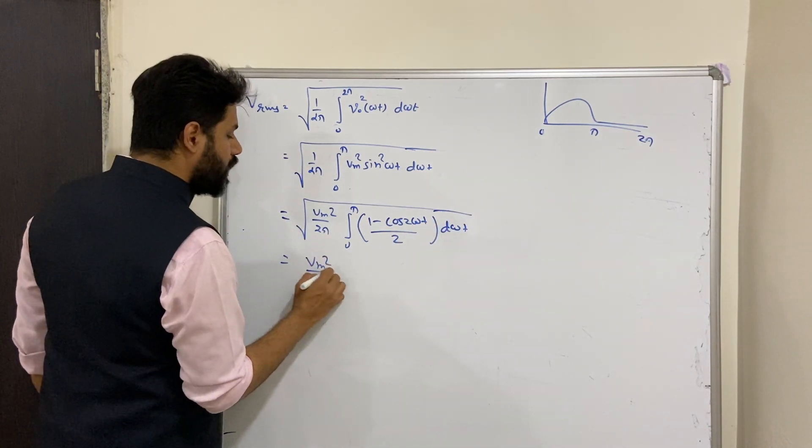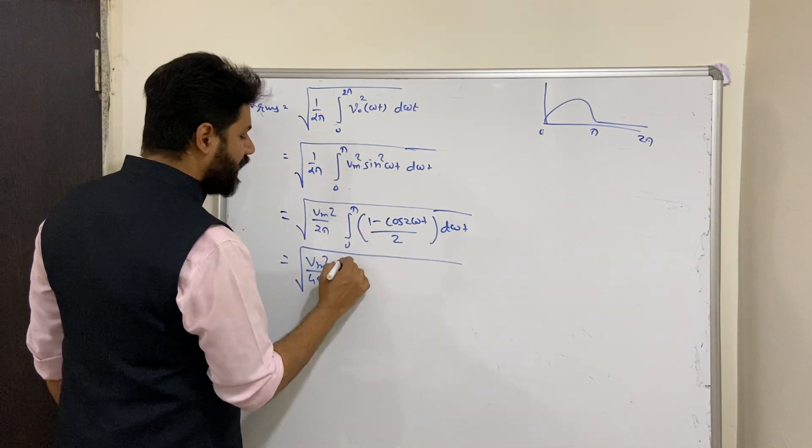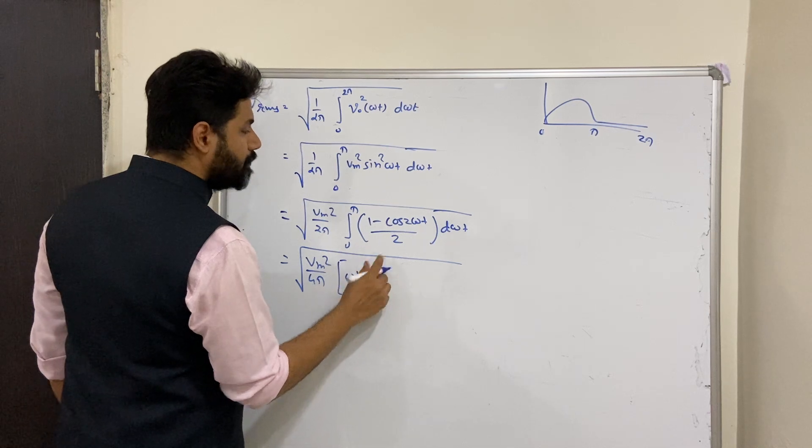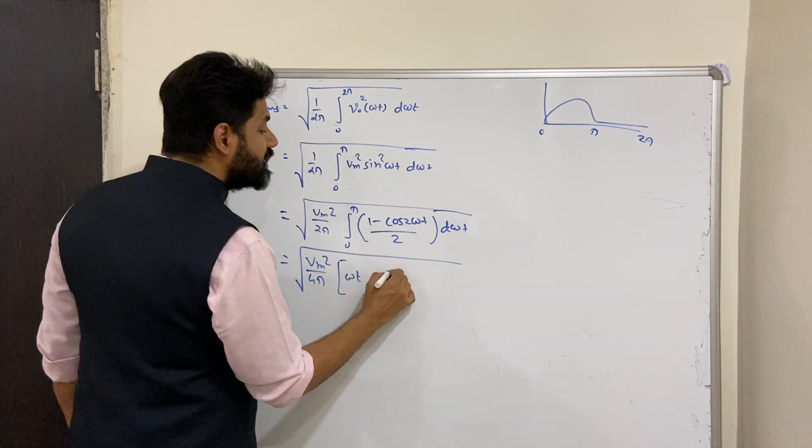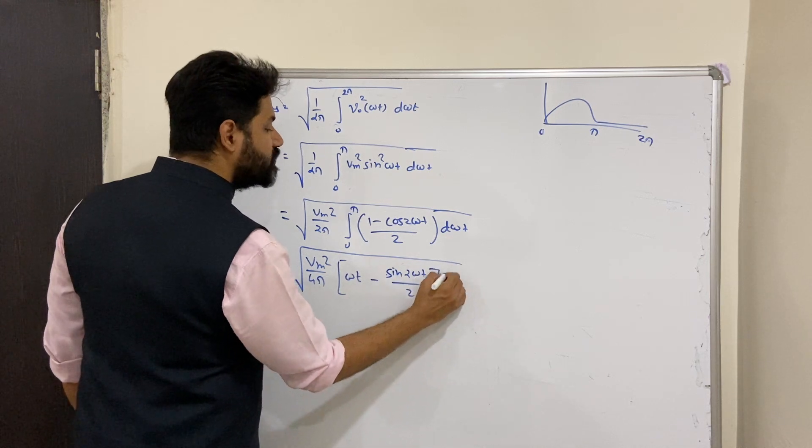We will be having Vm square divided by 4π and root. We have integration of 1 will be omega t, omega t minus integration of cos omega t, sin 2 omega t divided by 2, running from 0 to π.